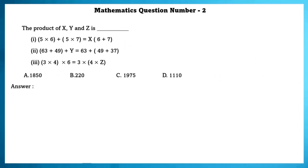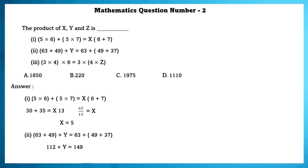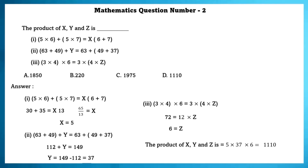Mathematics question number 2. The product of X, Y and Z is blank. For the first equation, 5 into 6 plus 5 into 7 equals X bracket 6 plus 7 bracket close. Solving this, we find X equals 5. Similarly, solving the second equation gives Y equals 37. In the third equation, Z equals 6. Now X into Y into Z is equal to 1110.